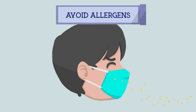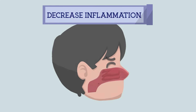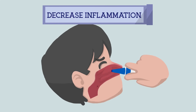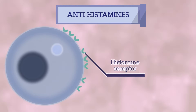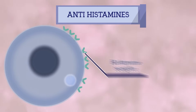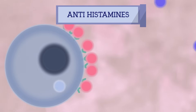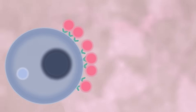2. Decrease inflammation. This can be achieved by steroids applied directly to the nasal mucosa. 3. Antihistamines. These target the action of histamines by blocking the histamine receptors, thus stopping the action of histamine.